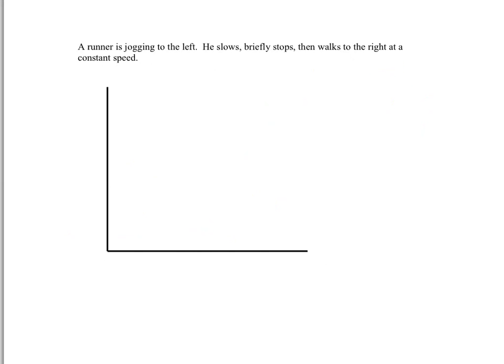Here's another one. A runner is jogging to the left. So I can really choose this runner to be anywhere. Since I know I'm going to be going left, which is a negative direction, I'm going to have the runner start up here. Again, this is X position. This is time.